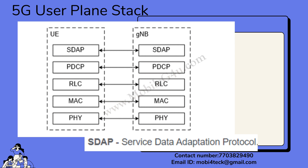This new layer is called SDAP — Service Data Adaptation Protocol. The SDAP layer takes care of QoS (Quality of Service) and handles all QoS functions. This is a very important layer newly added in the 5G user plane stack. The same layers — Physical, MAC, RLC, PDCP, and SDAP — are also present in gNodeB, and these layers communicate with each other to share their respective data.